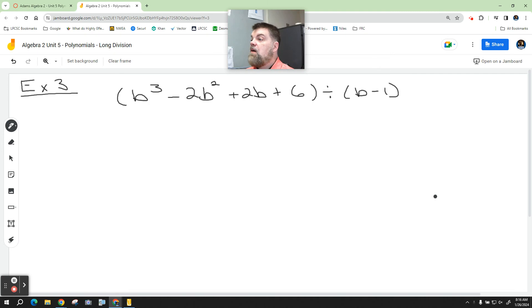We're dividing by a binomial technically. So this one should be b minus 1 goes into b cubed minus 2b squared plus 2b plus 6.